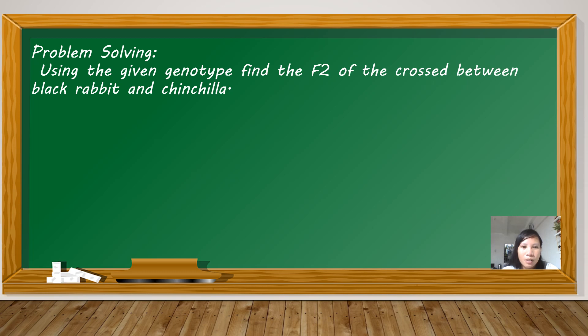Let us continue solving the problem. The same problem, but the difference is we are looking for the F2. Still, this problem is from our module. The question is, find the F2 of the cross between the black rabbit and chinchilla. What do we mean by F2? When we say F2, filial generation 2, the offspring of F1.